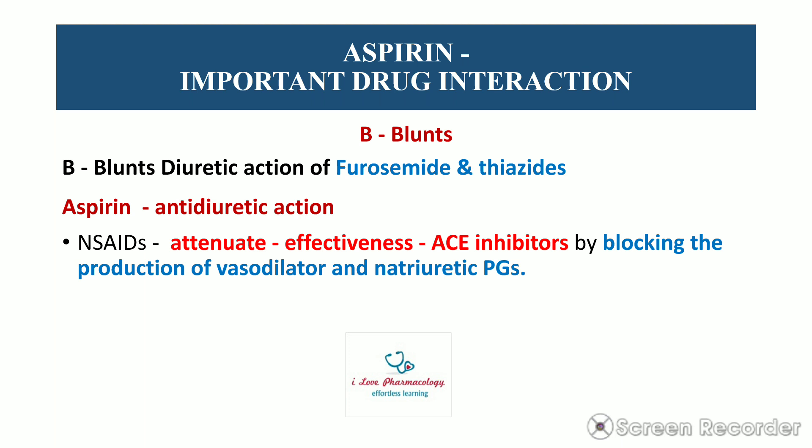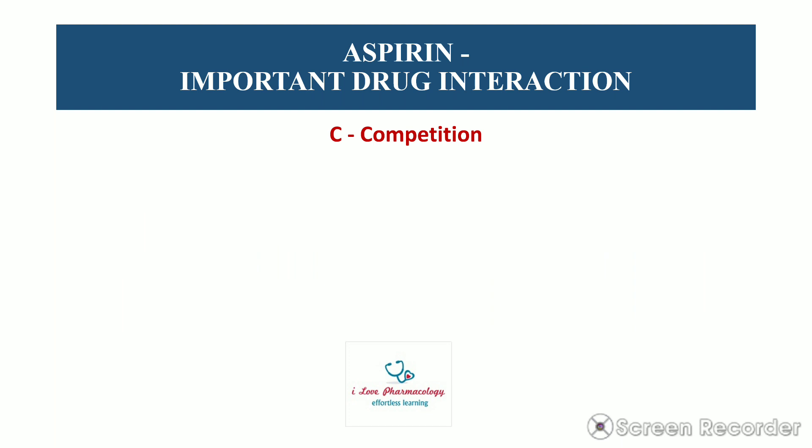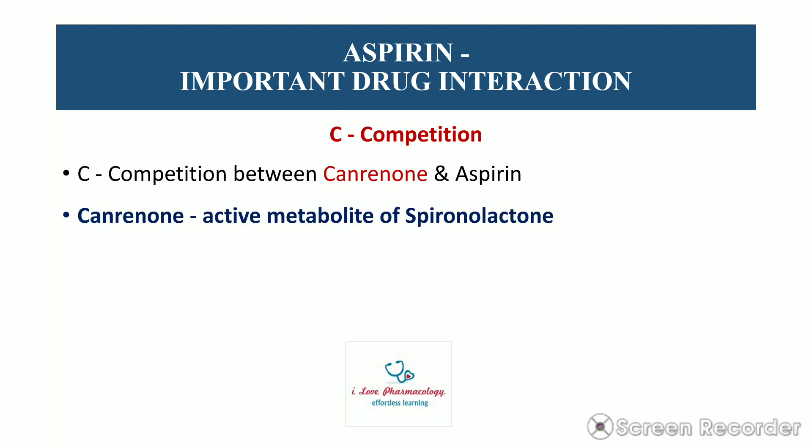Aspirin also blunts the effectiveness of ACE inhibitors by blocking the production of vasodilatory and natriuretic prostaglandins. Additionally, the combination of NSAIDs and ACE inhibitors increases the risk of hyperkalemia, which can lead to cardiac arrhythmias — especially in elderly patients and those with hypotension, diabetes mellitus, or ischemic heart disease.